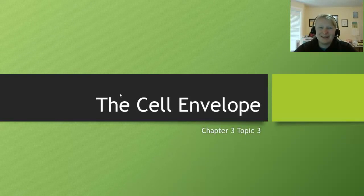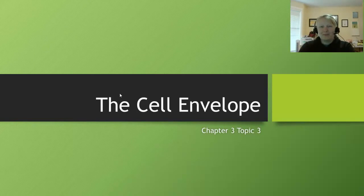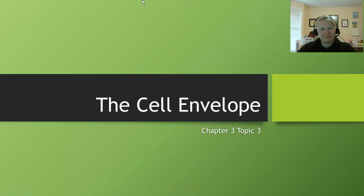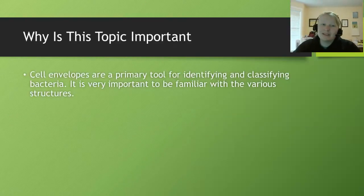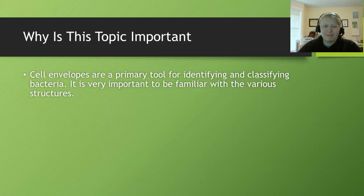Welcome to Chapter 3, Topic 3. This is a cell envelope. We've talked about the inside of the cell, we've talked about the outside of the cell, now we're here to talk about what separates the two. Remember that prokaryotic cell envelopes are very unique, and this is one of our first steps to differentiate between bacteria in the laboratory. This is our primary tool for identifying and classifying bacteria, so it's very important to understand these differentiations so that you can move forward identifying your bacteria.